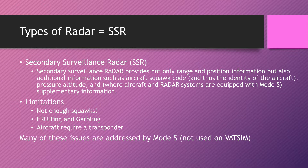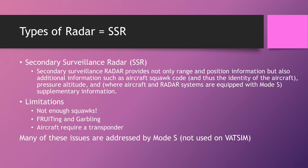There are limitations to SSR. Obviously you need a transponder — not a problem on VATSIM since every pilot client makes it appear you have one. A major issue is running out of squawk codes. Since codes only go from 0000 to 7777, and the number of real-world aircraft is increasing, we're actually running out of squawk codes. That's why there's such a specific plan for who has what codes — you can't use anyone else's squawk codes.